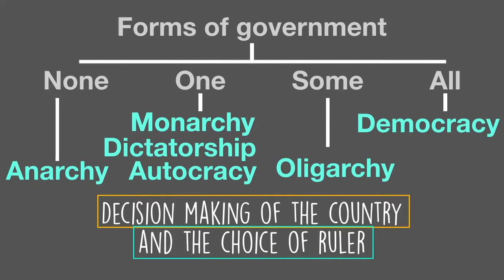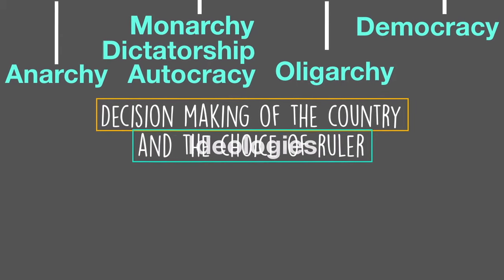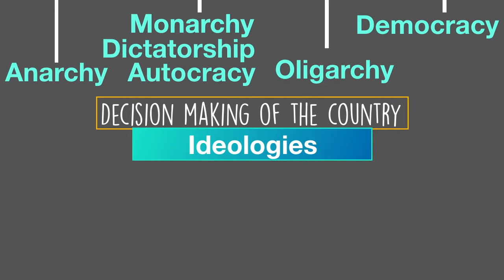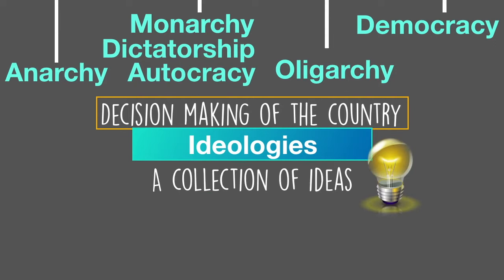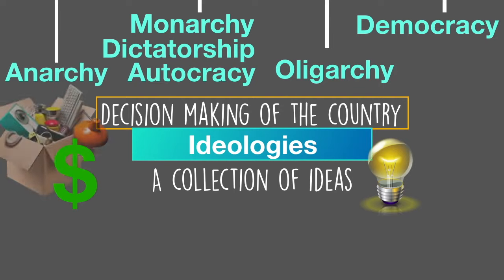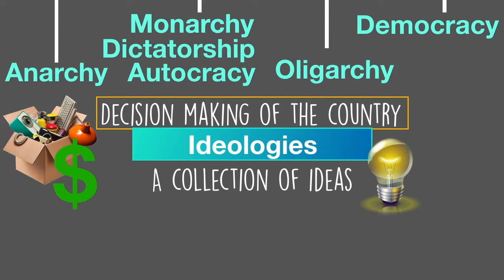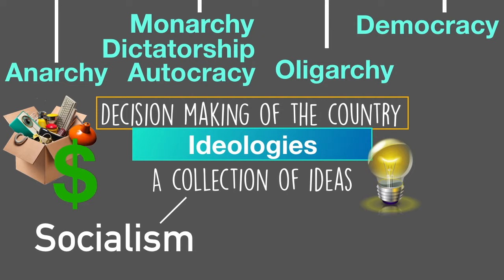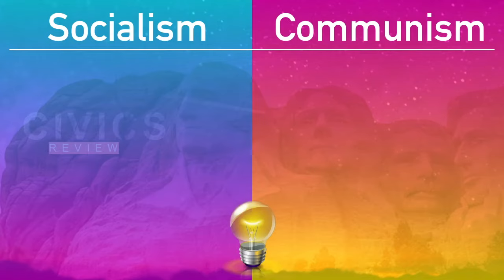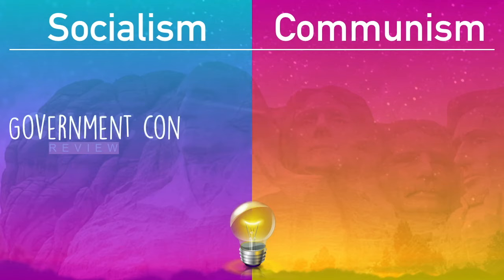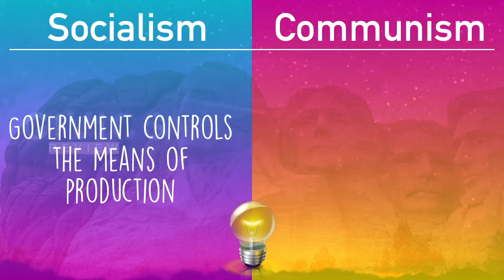This isn't just about who is in control of a country — it's also about the ideas of running a country, and usually that has to do with the economy and property. The two ideologies we are required to know are socialism and communism. Socialism is an idea where the government controls the means of production.